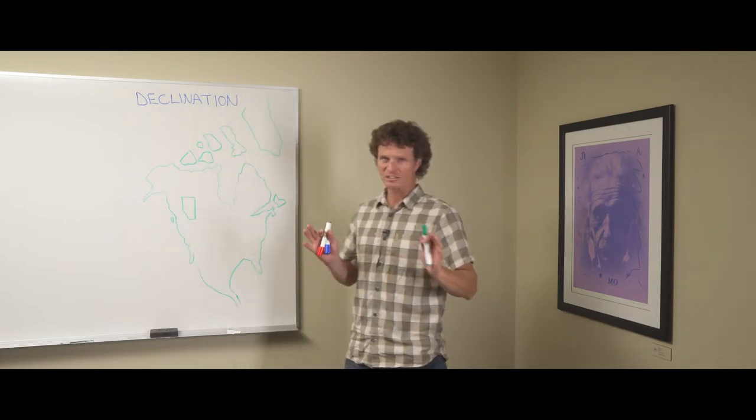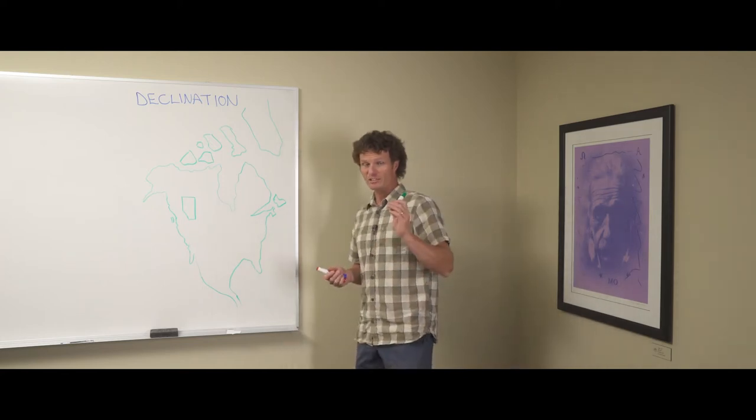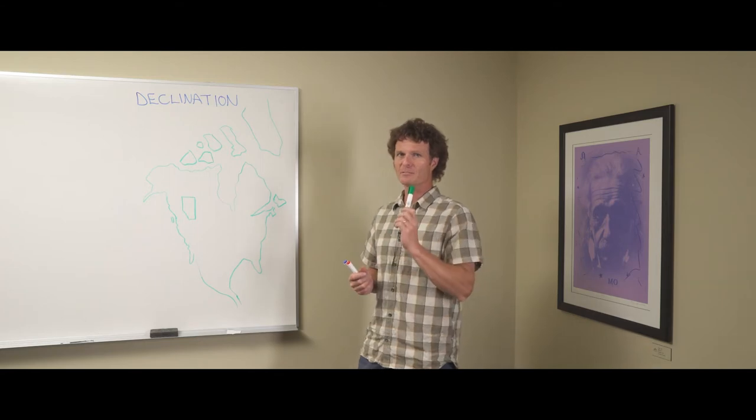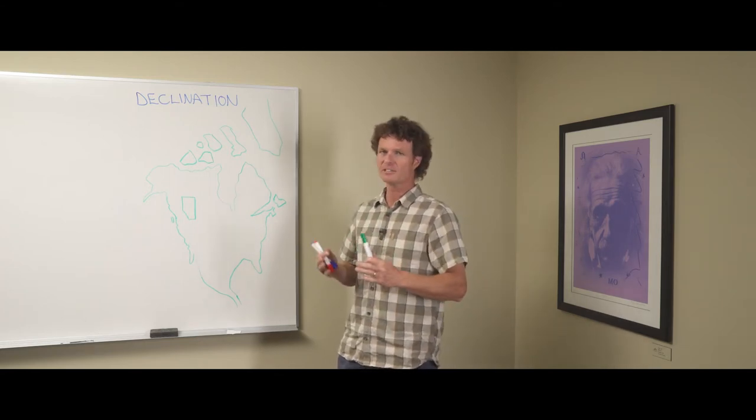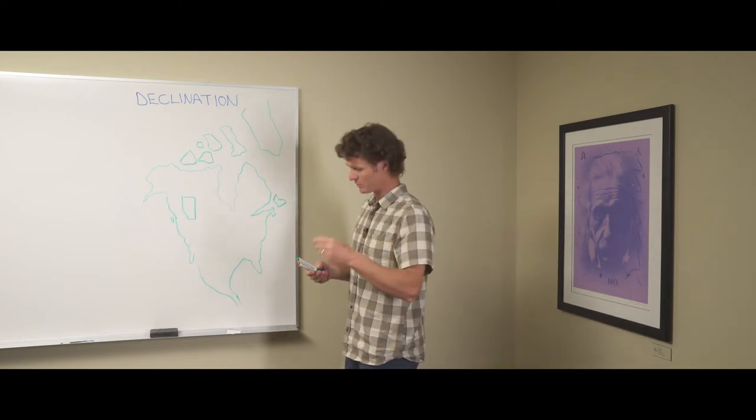Let's explain declination to some degree for you. So declination is the difference in angle between magnetic north and grid north. So how does this work? Well, there's three norths.